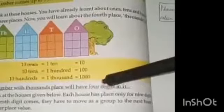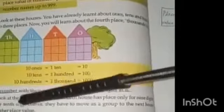Now look at the houses given below. Each house has space only for nine digits. When the tenth digit comes, they have to move as a group to the next house with a higher place value. For example, we are having this group of houses.